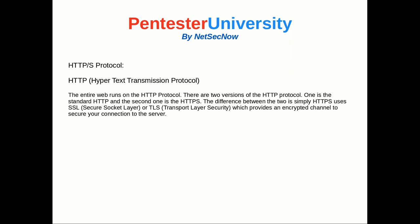There are two versions of the HTTP protocol. One is the standard HTTP, and the second is HTTPS. The only difference between the two is that HTTPS uses SSL, or Secure Socket Layer, or TLS, which is the newer style — Transport Layer Security — which provides an encrypted channel to secure your connection to the server. This is really helpful to prevent eavesdropping or man-in-the-middle attacks, although it's not always as successful as it would like to be.